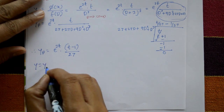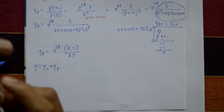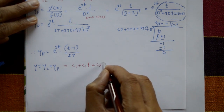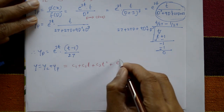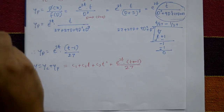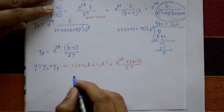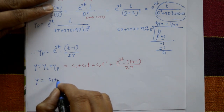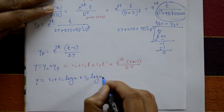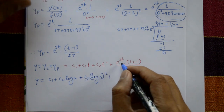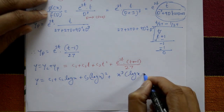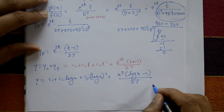The complete solution is y = yc + yp = c₁ + c₂t + c₃t² + e^(3t)·(t-1)/27. Now substitute back t = log x, so t² = (log x)², and e^(3t) = x³. The required solution is y = c₁ + c₂·log x + c₃·(log x)² + x³·(log x - 1)/27.